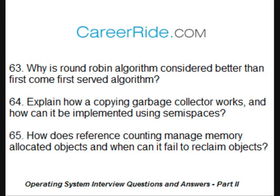Why is the round robin algorithm considered better than the first come first served algorithm? The first come first served algorithm is the simplest scheduling algorithm. Processes are assigned to the CPU based on their arrival time in the ready queue. Since it is non-preemptive, once a process is assigned to the CPU, it runs till completion. It does not provide good response times and can make other important processes wait for long. On the other hand, round robin works on the concept of time slice or quantum. Every process is given a predefined amount of time. If a process is not completed in its stipulated time, it is assigned to the next process waiting in queue, maintaining a continuous execution of processes.